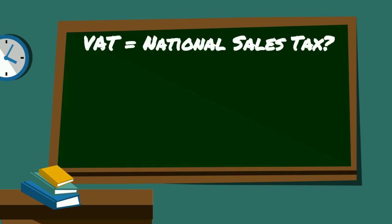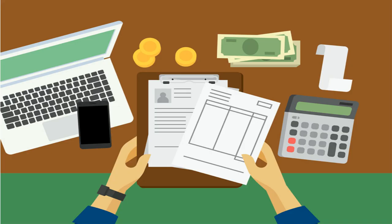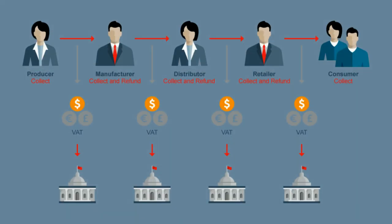Many may think that means the value-added tax is a lot like a national sales tax. While it does sound similar, there are some key differences. A national sales tax is only paid at the point of sale by the consumer. The VAT tax system is invoice-based and collected at all points during the item's production. Every seller between the producer of the raw material to the seller of the final product charges VAT tax to the buyer, and the tax is then sent to the government.